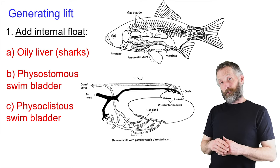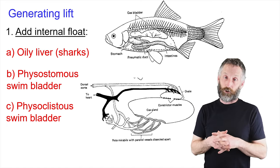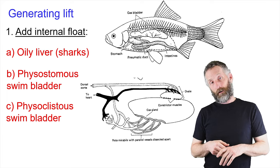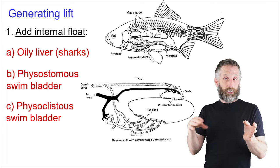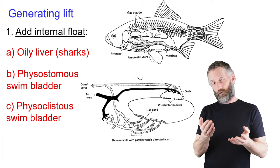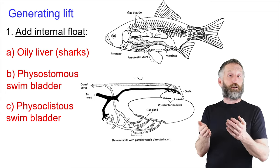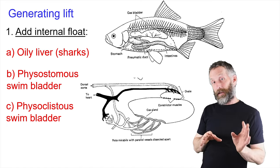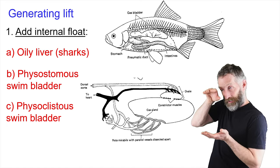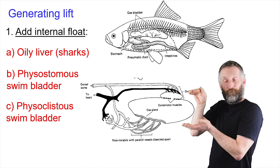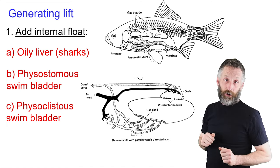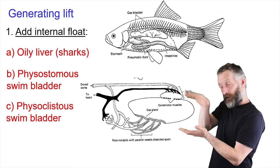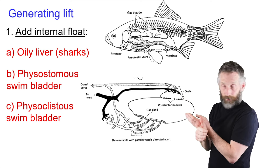Now you're generating thrust, but you also need to generate lift. Gravity works in water just as on land, and everything in the water, unless it has some way to float or generate upward thrust, just sinks to the bottom. So many fish want to maintain neutral buoyancy — staying at the depth they want without wasting much energy. To maintain that position, they need to counteract gravity with a force generating lift.